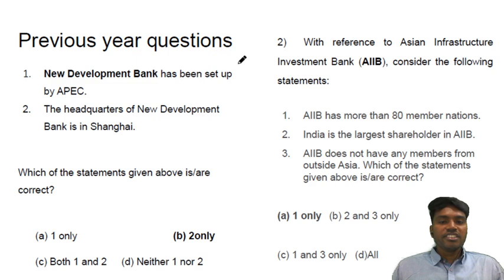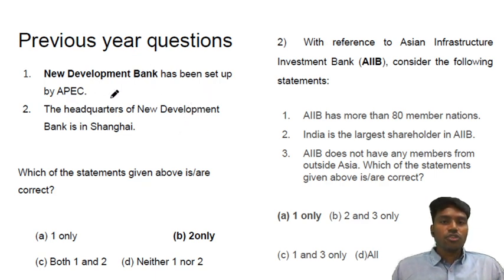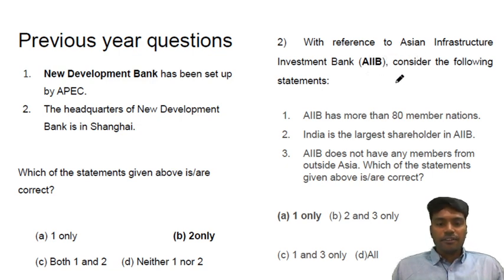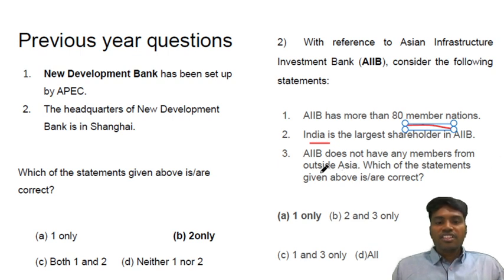Previously, UPSC has asked questions from multilateral institutions. There was already a question on the New Development Bank — that it was set up by APEC, which is wrong; it is BRICS, and its headquarters is in Shanghai. In 2019, they asked about the Asian Infrastructure Investment Bank — about its members, who is the greatest stakeholder, and from which regions it has its members. These are the areas you should focus on while doing revision.